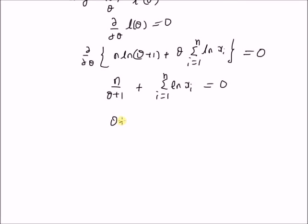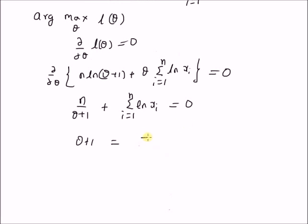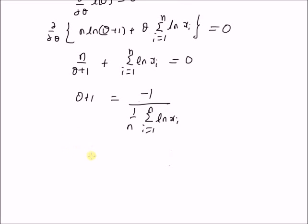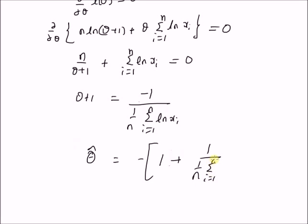Therefore theta plus 1 equals negative 1 over the quantity 1 over n times the summation from i equal to 1 to n of log of x_i. Thus the maximum likelihood estimator of theta is theta hat equal to negative 1 plus 1 divided by the quantity 1 over n times the summation from i equal to 1 to n of log of x_i.